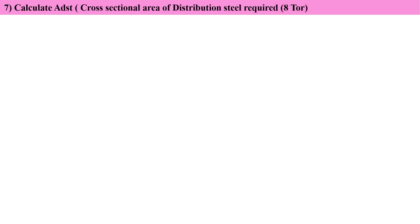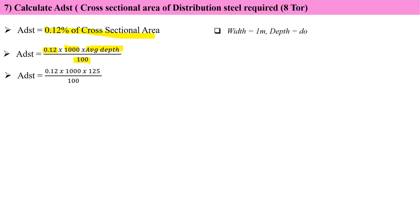Calculation of Ast distribution. I'm taking 8 mm bar. Formula is 0.12% of cross-sectional area. 0.12% means divided by 100. Cross-sectional area is width 1000 mm multiplied by average depth. Putting values, I get Ast distribution equals 150 mm square.